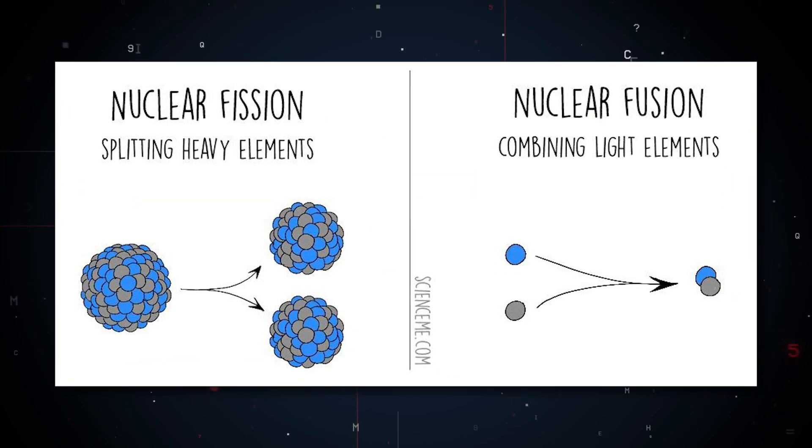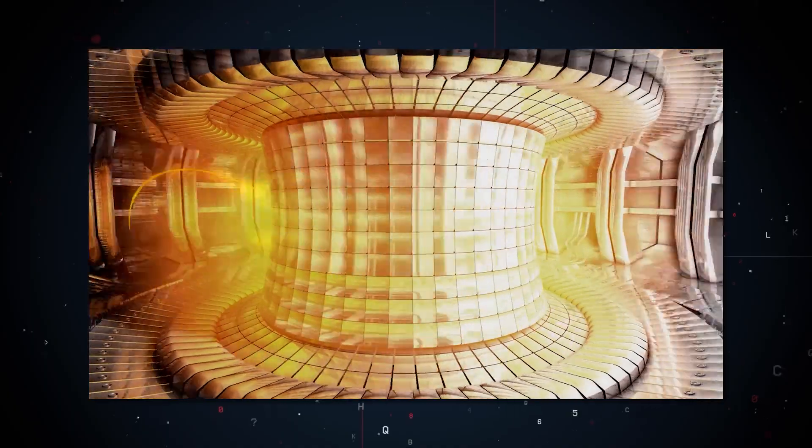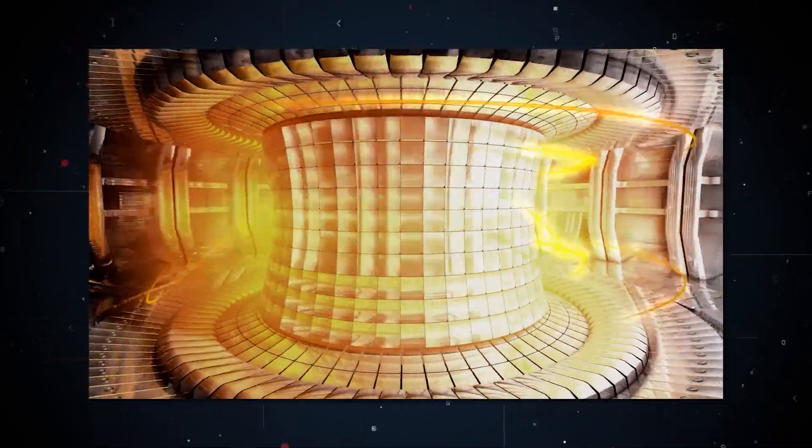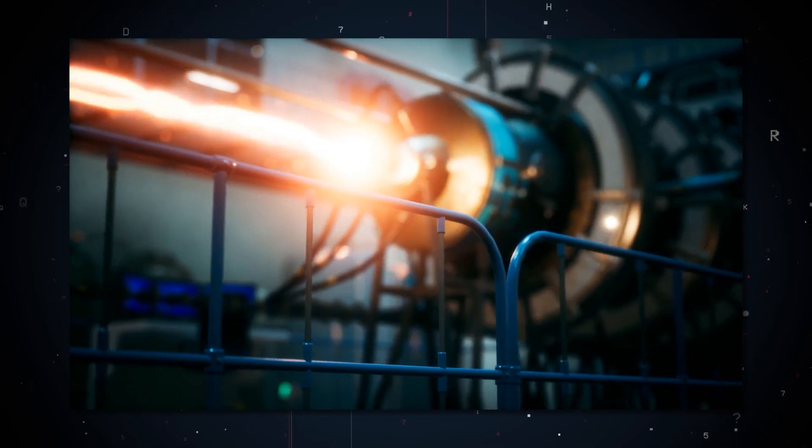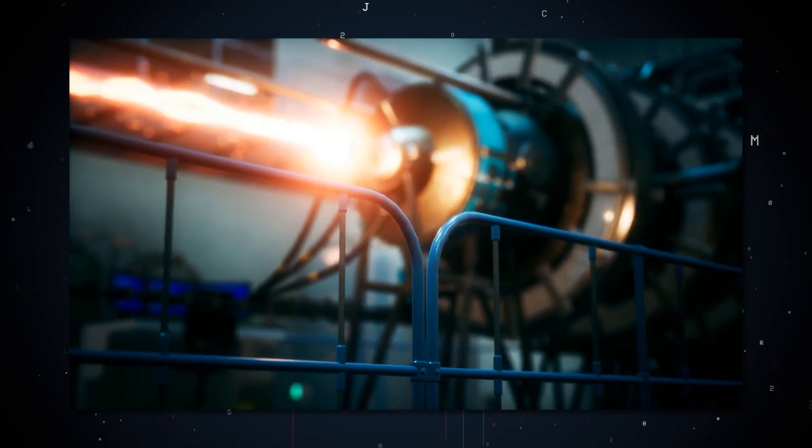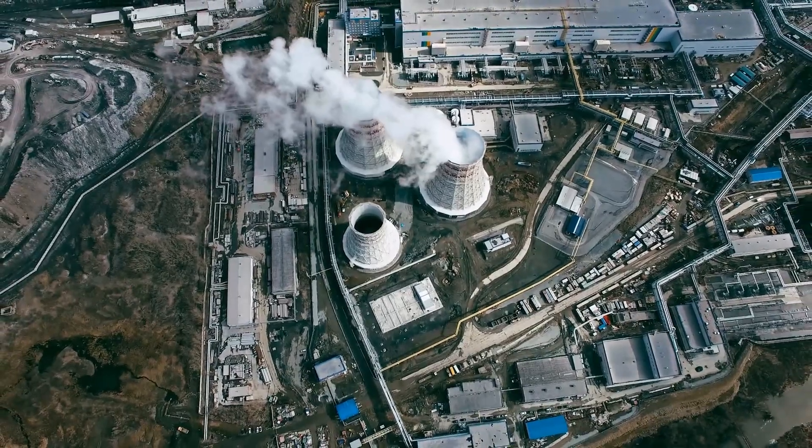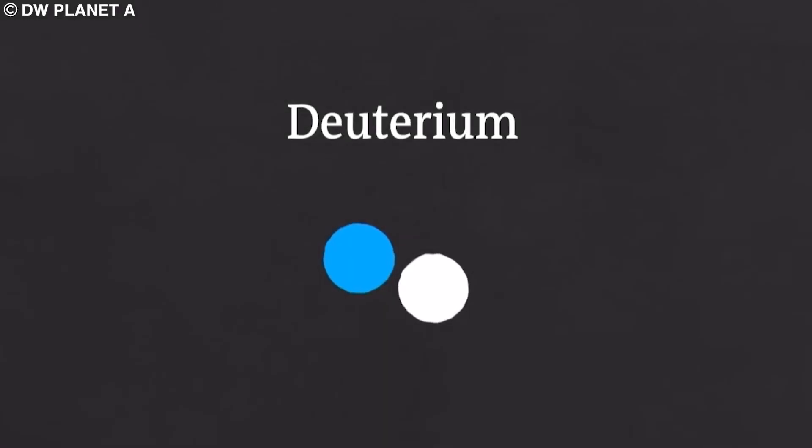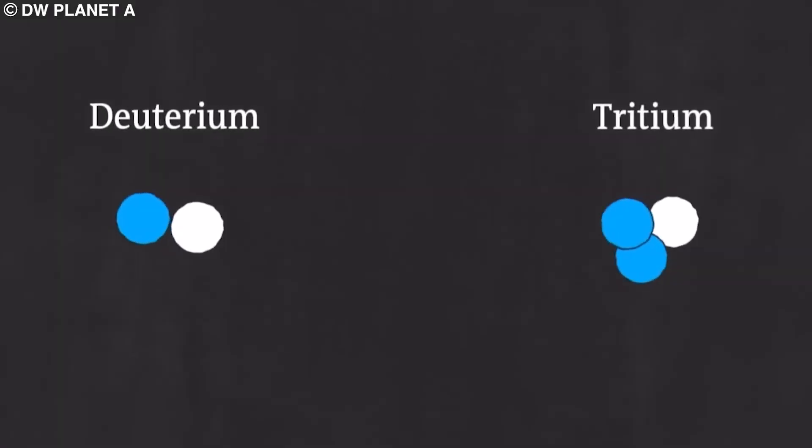Perhaps the most important distinction between fusion and fission is that fusion does not create harmful radioactive byproducts that need to be stored for thousands of years. Currently, all nuclear power plants use the process of nuclear fission in order to generate electricity. As I mentioned, the process produces radioactive waste that must be safely stored over long periods. Fusion, on the other hand, produces the noble gas helium.